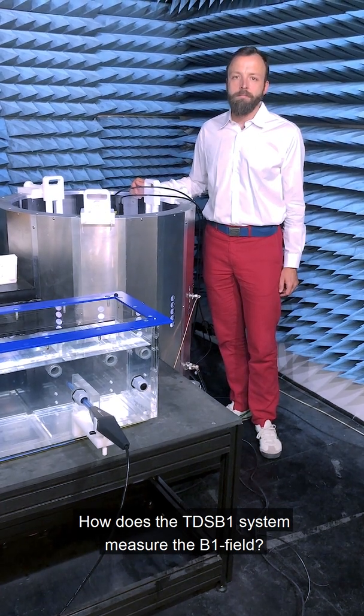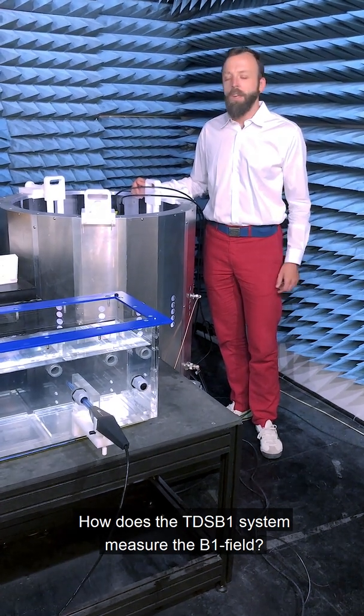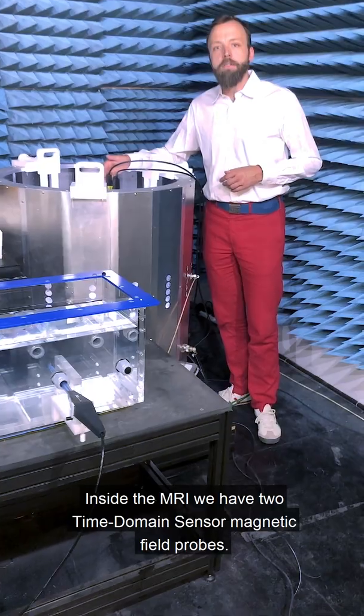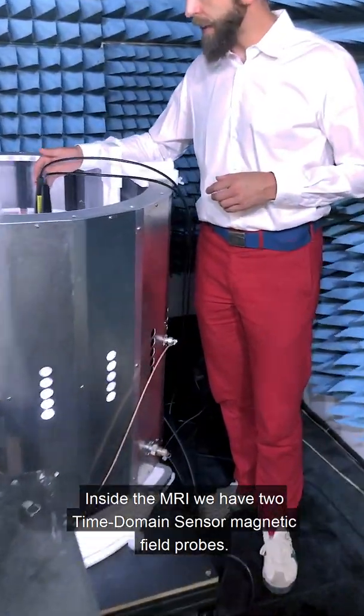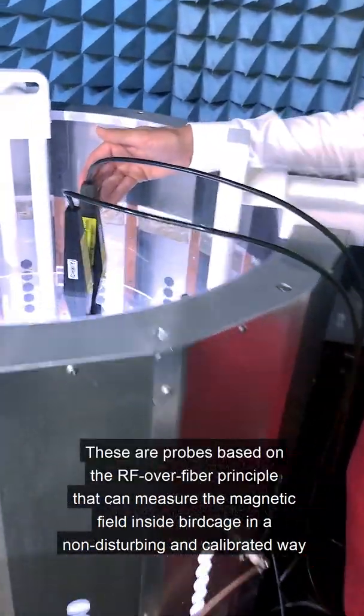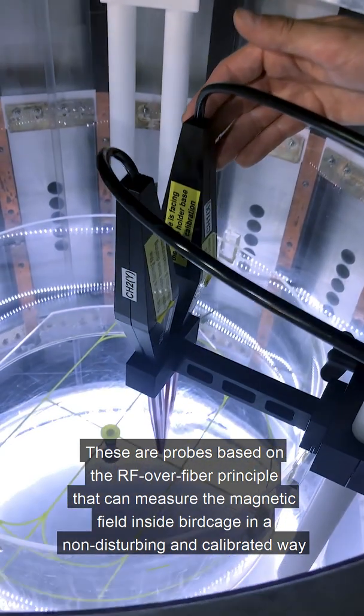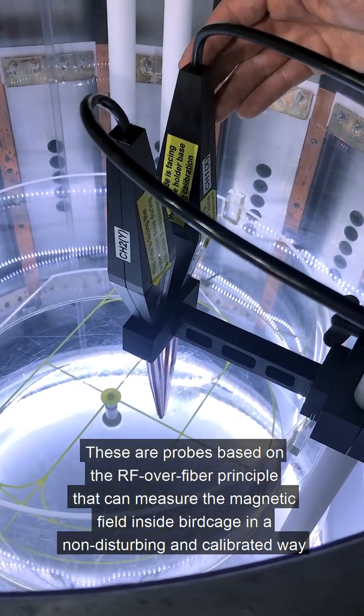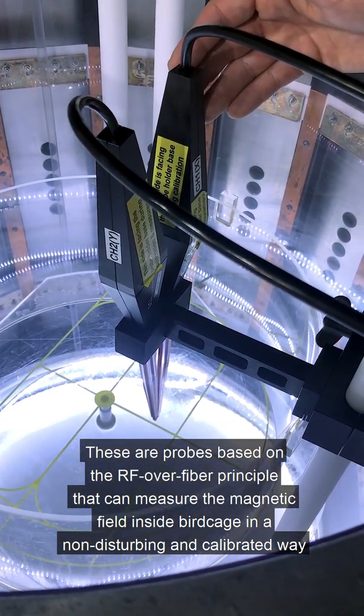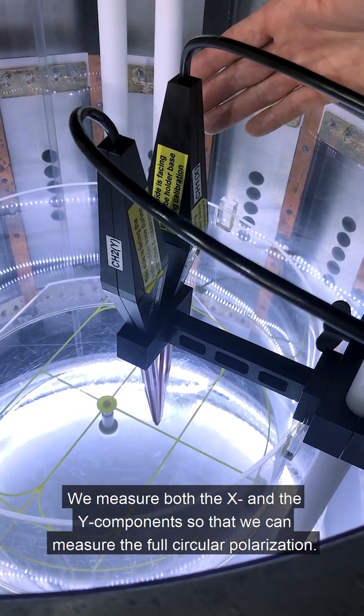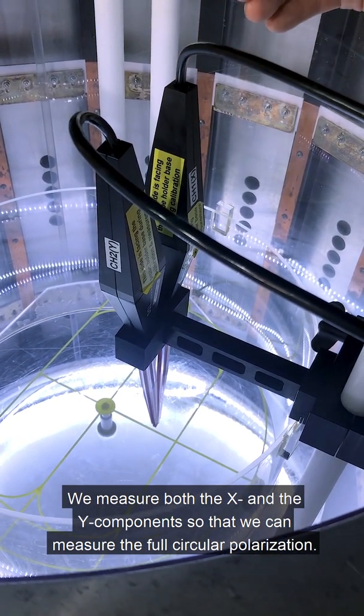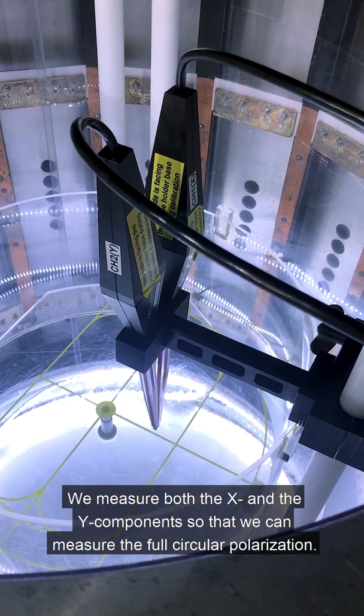So Sven, how does the TDSB1 system measure the B1 field? For that, inside the MRI we have two time domain sensor magnetic field probes. These are probes based on the RF over fiber principle that can measure the magnetic field inside the birdcage in a non-disturbing and calibrated way. We measure both the X and the Y components so that we can measure the full circular polarization.